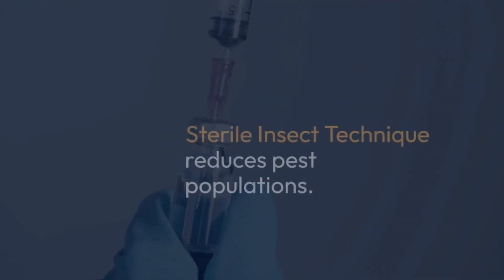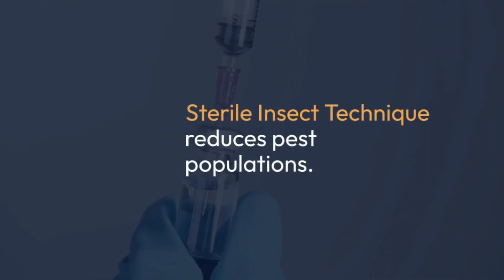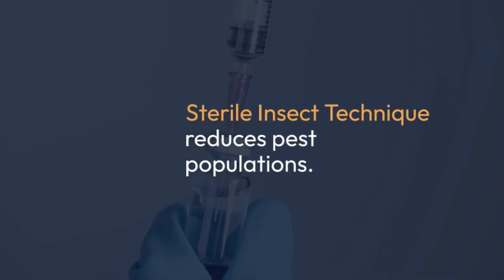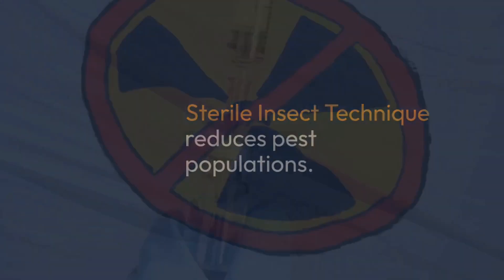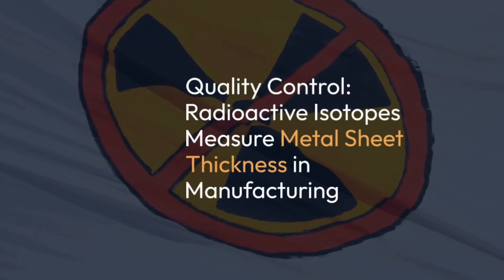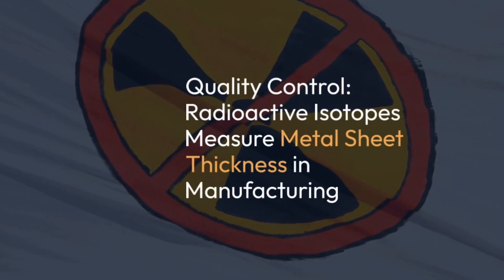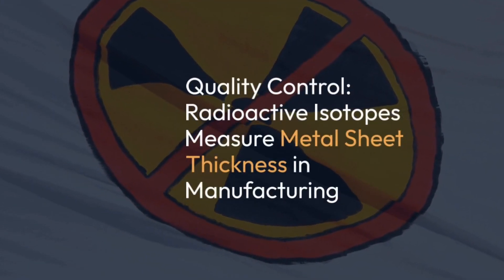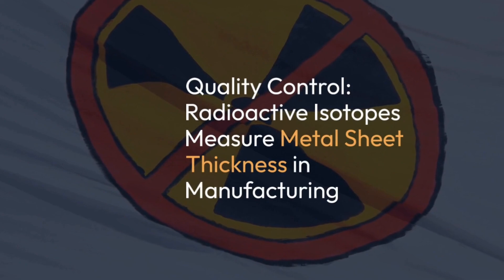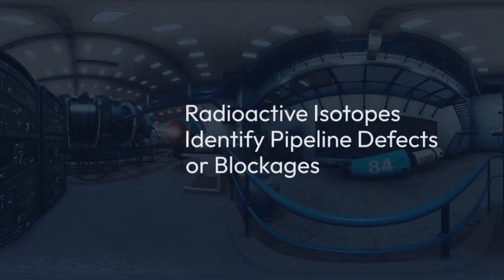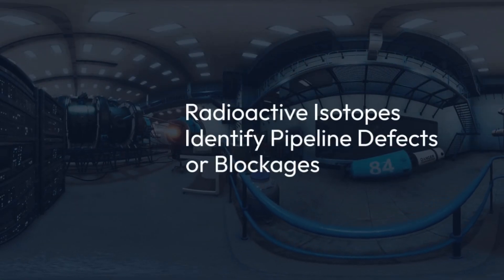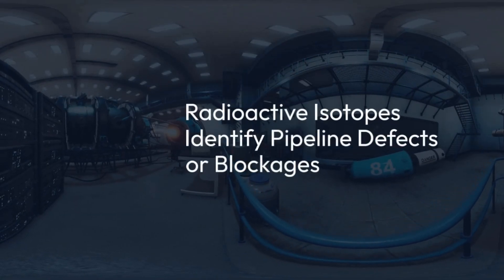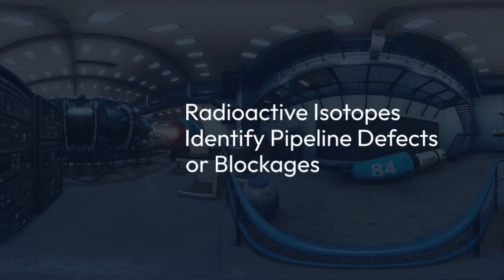The sterile insect technique uses radioactive isotopes to reduce pest populations. For quality control, radioactive isotopes measure metal sheet thickness in manufacturing and identify pipeline defects or blockages.